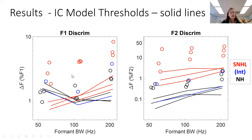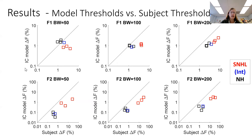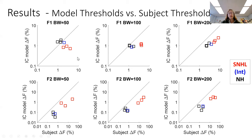For F1 discrimination, there's an interesting finding in that the model thresholds for listeners with sensorineural hearing loss are actually lower than model thresholds for normal hearing. This is better shown where we plot model thresholds versus subject thresholds for each formant in each row and for each bandwidth. You can see that for all F2 cases, the model and subject thresholds are well correlated. That's also true for the broader band F1, but for the narrower-than-typical bandwidths — the sharpened formant for F1 — you see the opposite pattern.